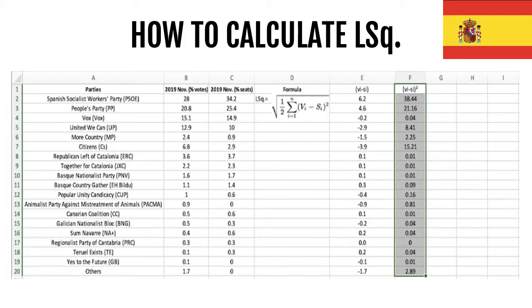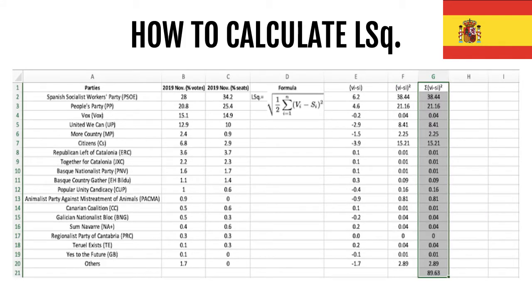The third step of the formula is to add all those squared differences between the percentage of votes and the percentage of seats. This is clearly seen here. The sum of all those differences squared is 89.63, seen at the bottom of the slide.